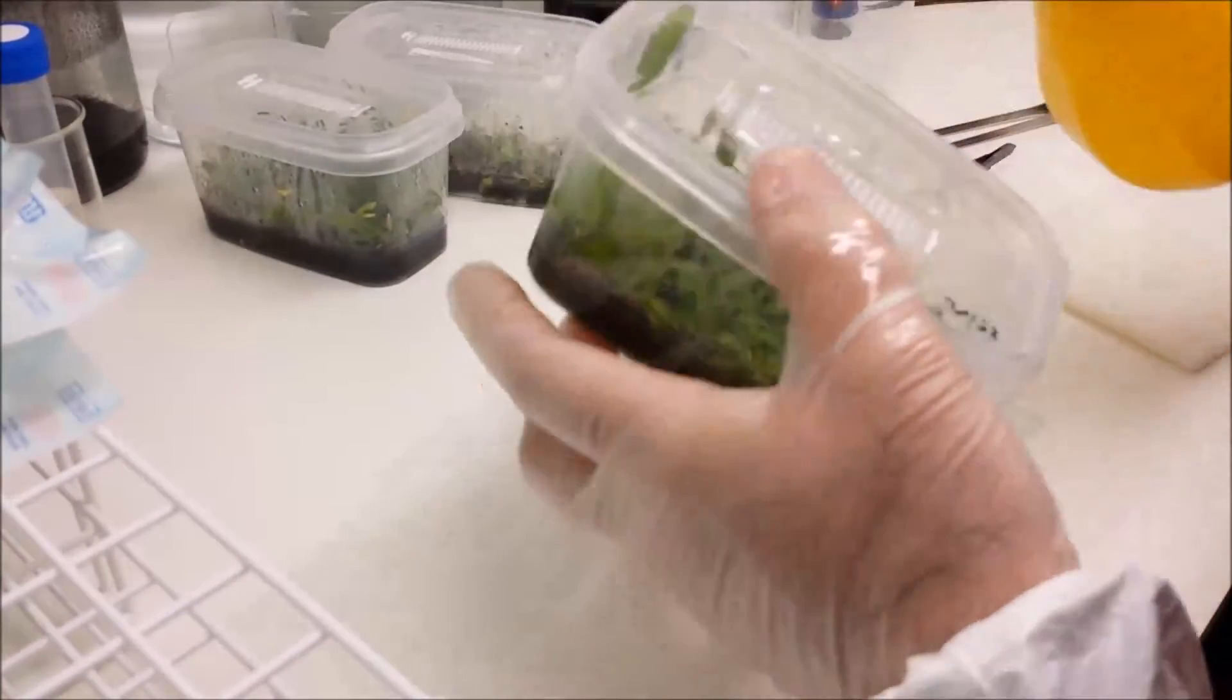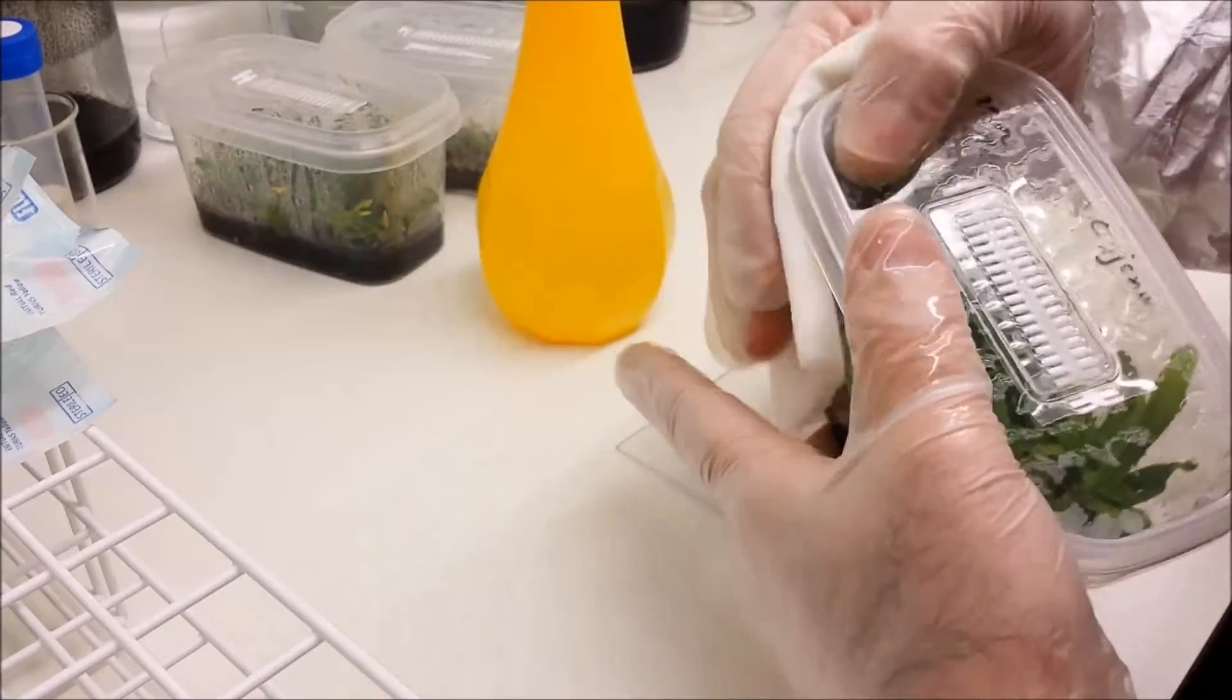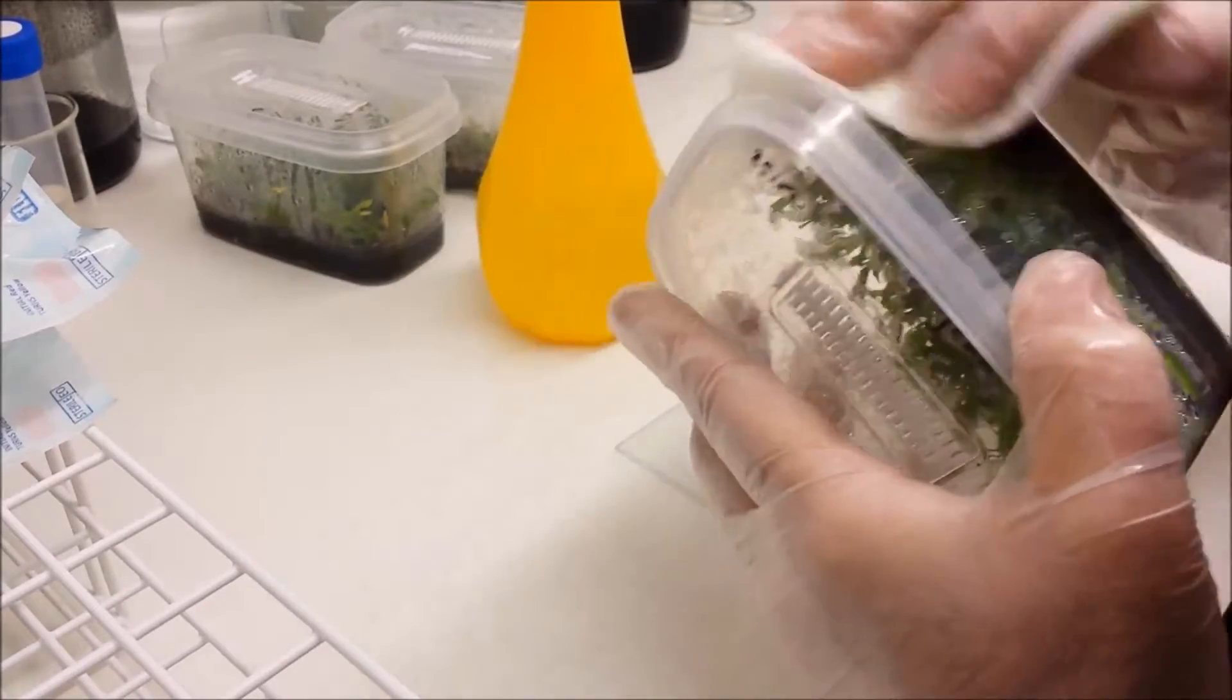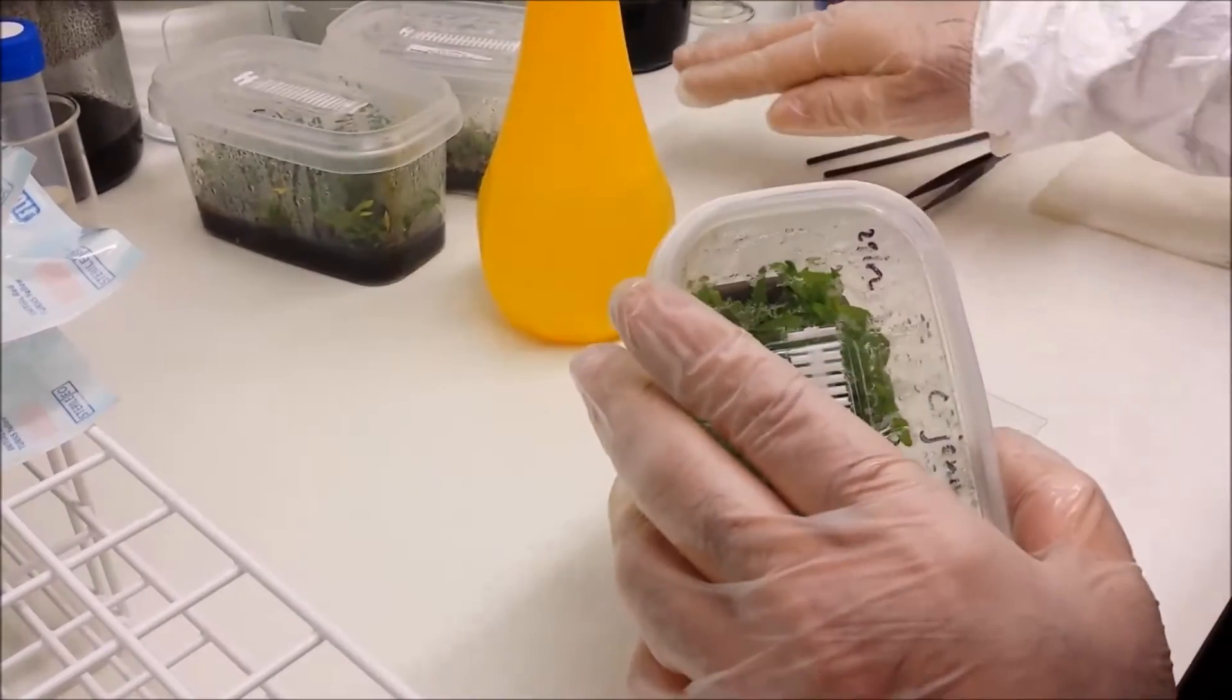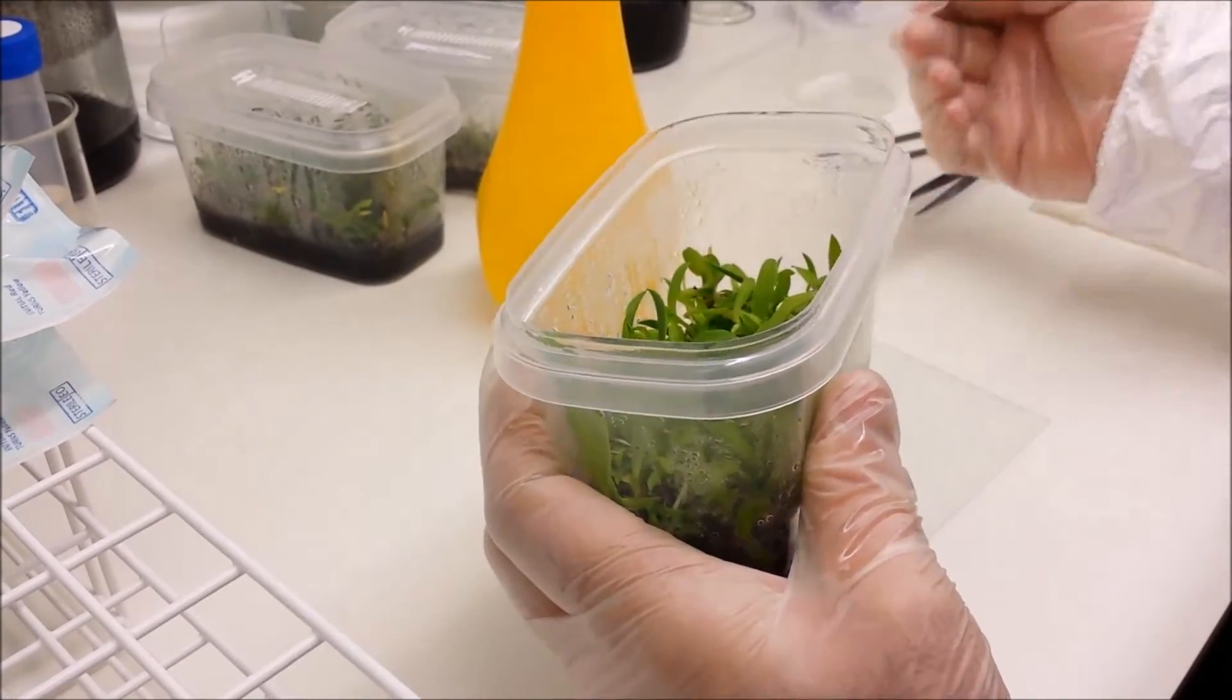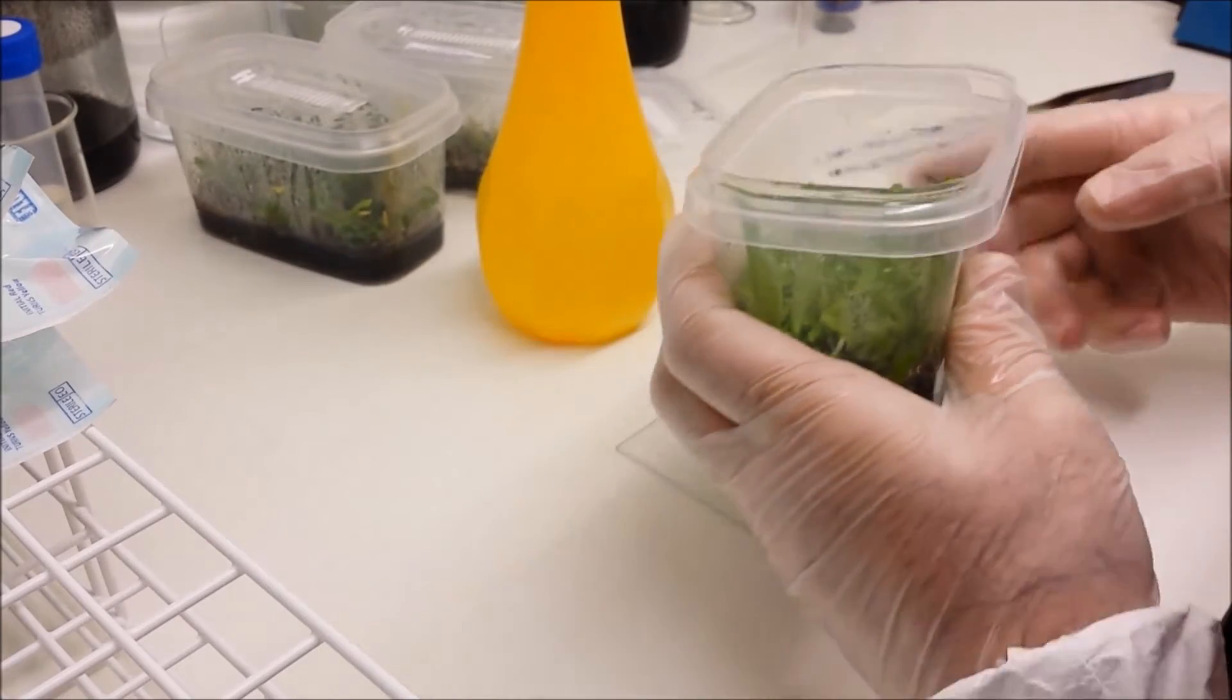Now although I've already sterilized these tubs, I'm going to do it again just to remind you. And I've sprayed it all over with IPA and I'm wiping it down including the base underneath. Don't forget that. And you're going to be removing the lid and placing it inside facing upwards, so not on the surface, in the sterile area away from where you're working.